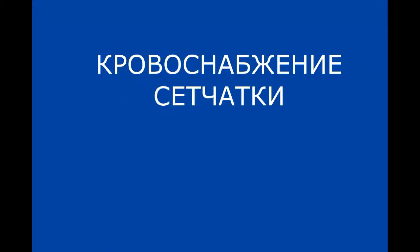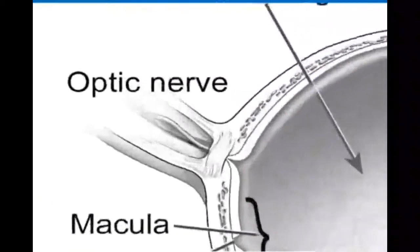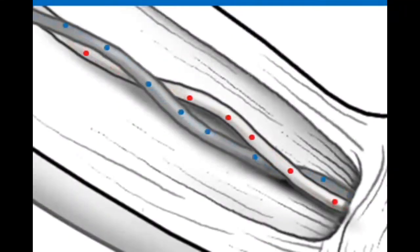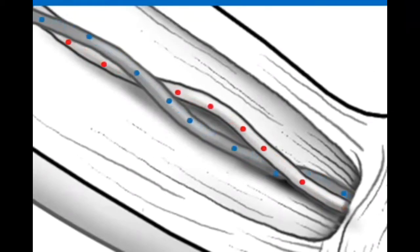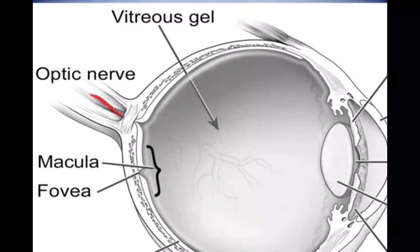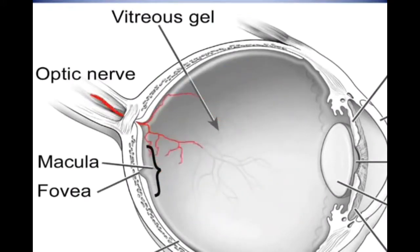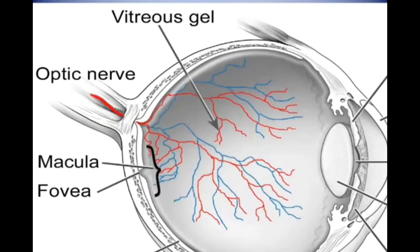There are two circulation pathways serving the retina. The first pathway serves the retina from the inside of the eye. In a normal eye, oxygen-rich blood flows into the inside part of the eye via the central retinal artery, shown here with red dots. Oxygen-depleted blood leaves the inside part of the eye through the central retinal vein, shown here with blue dots. The central retinal artery and the central retinal vein access the eye through a narrow channel in the optic nerve. As the central retinal artery enters the back of the eye, it branches into smaller vessels until blood reaches almost all areas of the retina's surface.